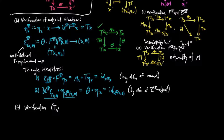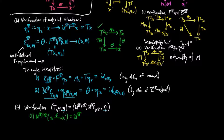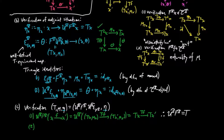Let's verify that the induced monad equals the monad t we started with. First, U^t ∘ F^t equals the functor t: acting on a morphism f, the free functor gives tf between free objects, and forgetting the actions mu_x and mu_{x'} leaves just the functor t. Second, the multiplication of the induced monad is U^t(epsilon_{F^t}), and since the free action is the multiplication mu by our definition, applying U^t just forgets the t-equivariant part, giving us mu again.